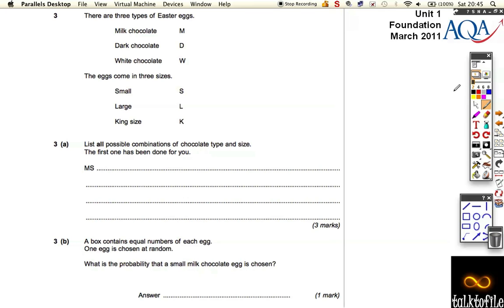It says there's three different types of chocolate: milk chocolate, dark chocolate, and white chocolate. They come in three sizes: small, large, and king size. We're going to list all the possible combinations of chocolate type and size.